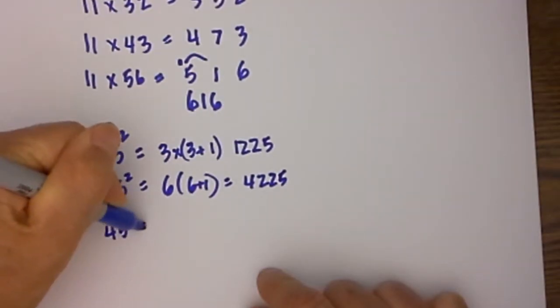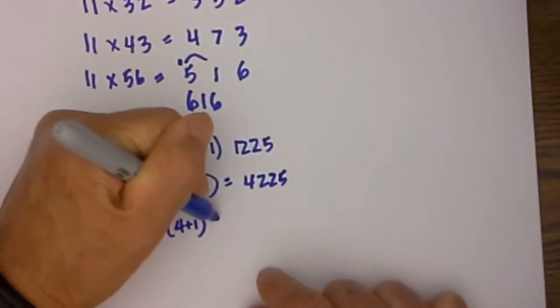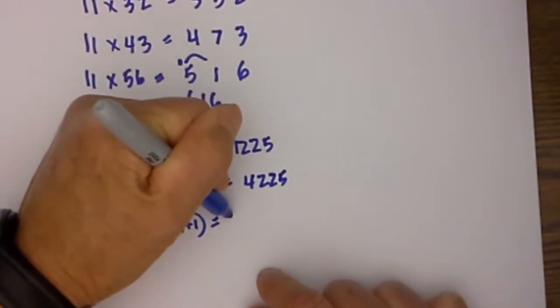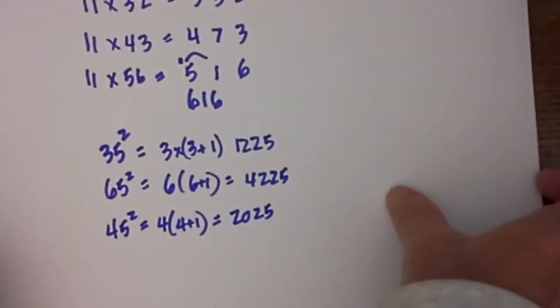45 squared equals 4 times 4 plus 1, which is equal to 5. 4 times 5 is 20. Tack on the 25 and there is your answer.